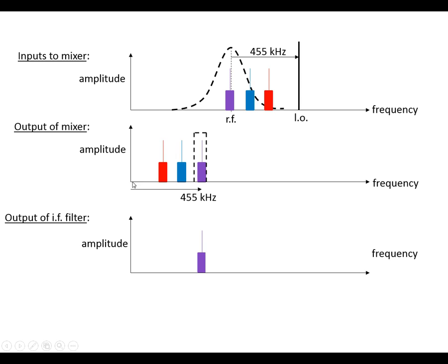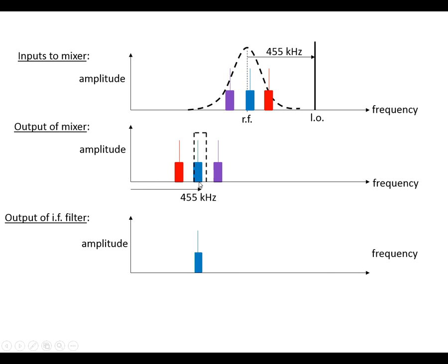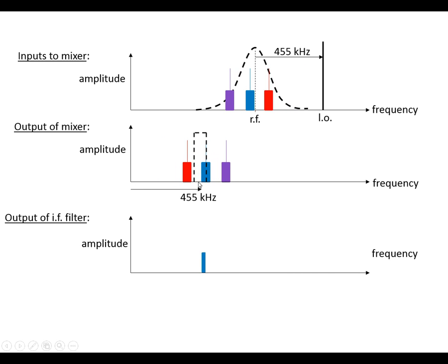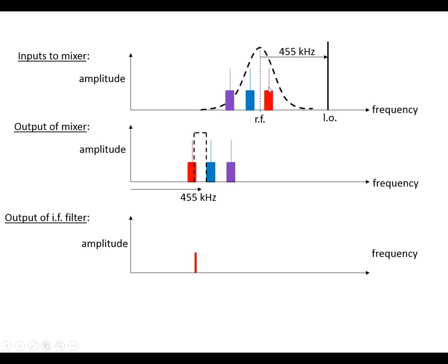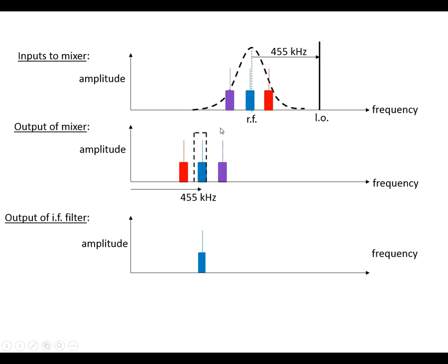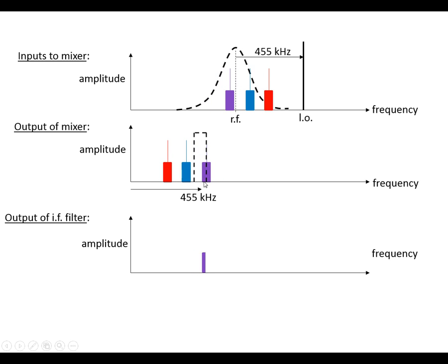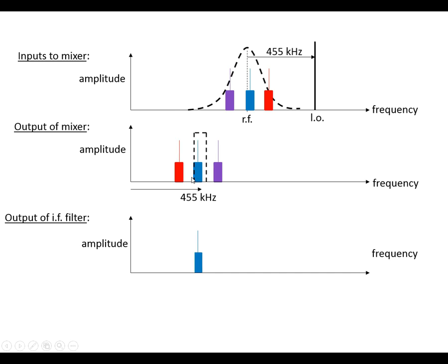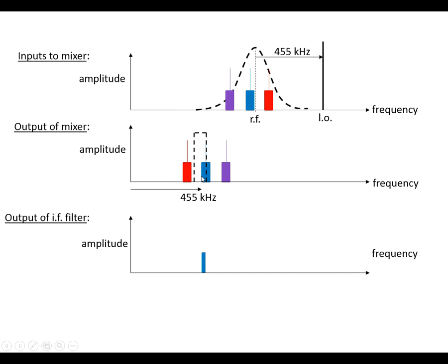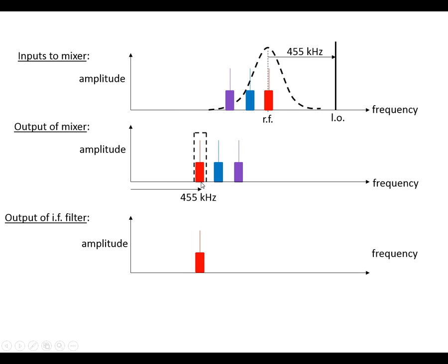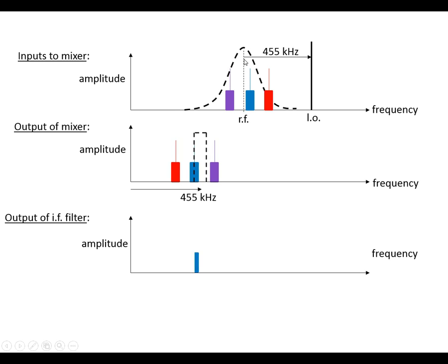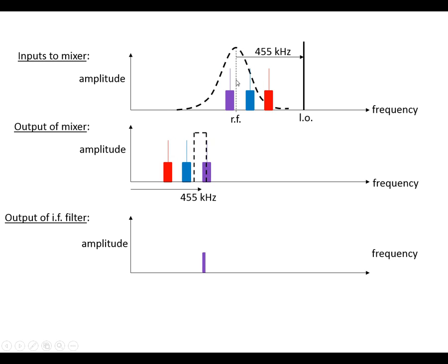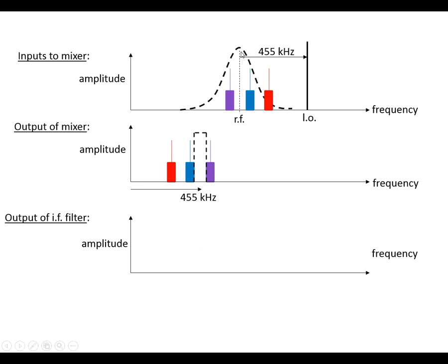We'll always get copies down here of these radio stations. We can see that the red one appears at 455 kilohertz, and eventually the purple one is going to appear at 455 kilohertz. So what appears at 455 kilohertz is a copy of wherever the dotted line here is at the resonant frequency.